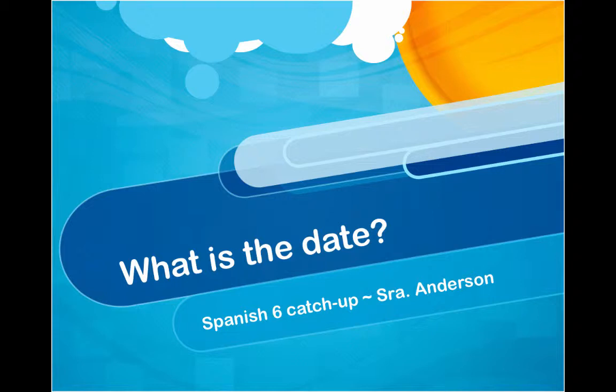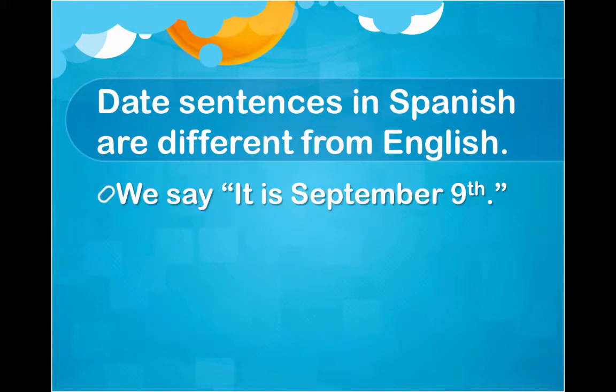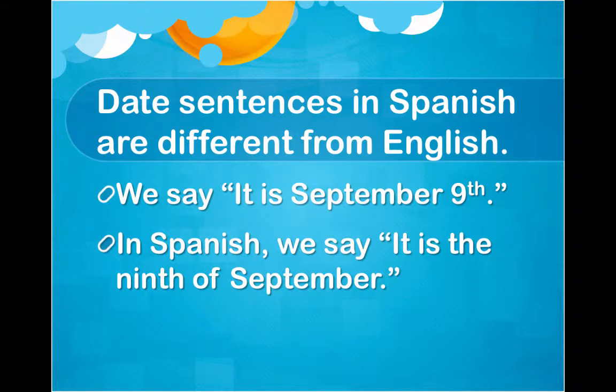What is the date? Date sentences in Spanish and English are different — this is the hardest thing about writing dates. They're almost reversed from each other. In English we would say, for example, 'It is September 9th,' however in Spanish the order is reversed. In Spanish we say 'It is the 9th of...'